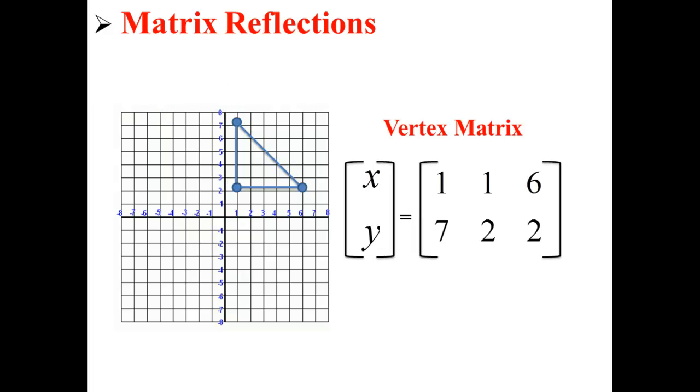We can write these points in a vertex matrix. Here the points (1, 7), (1, 2), and (6, 2) are in a vertex matrix.